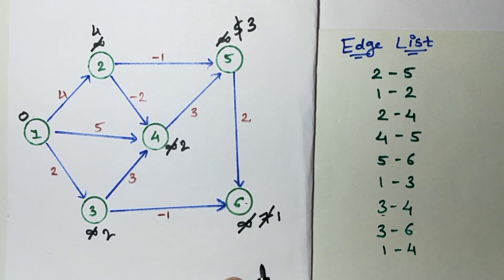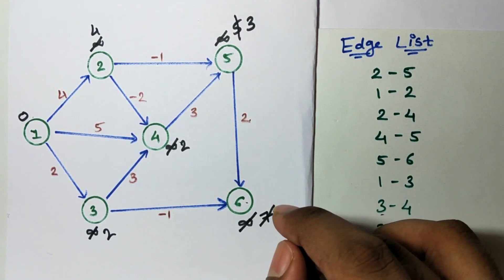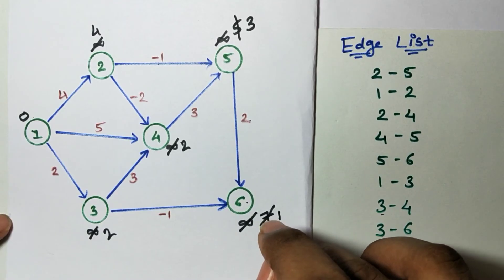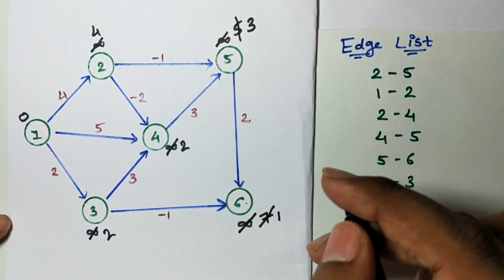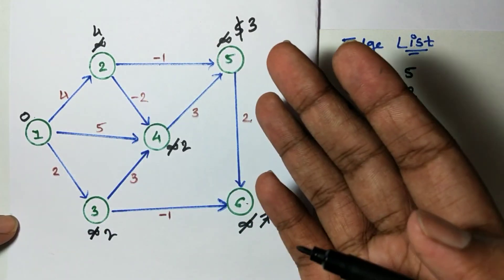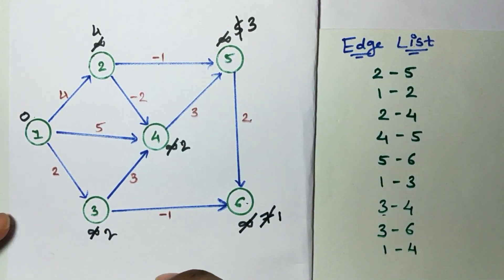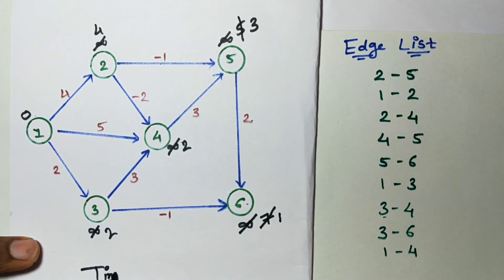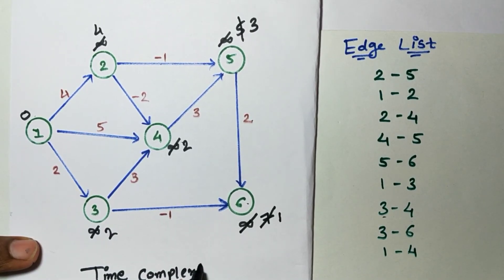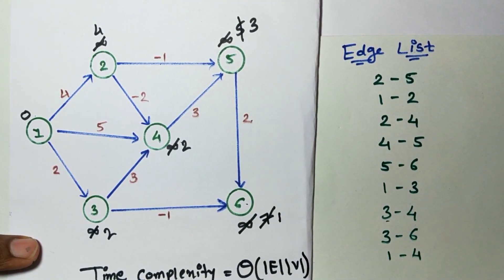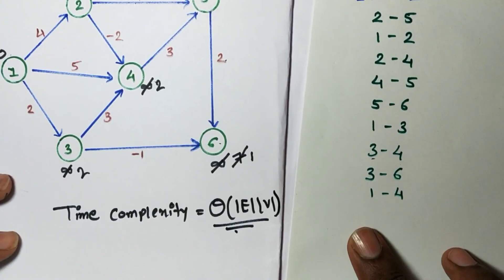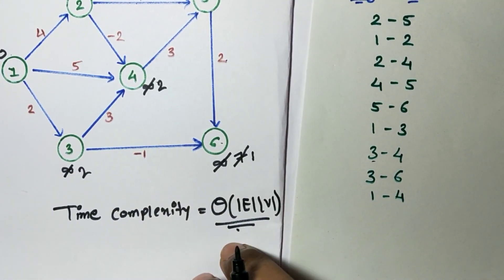Please note we have to perform this iteration N number of times, where N is the number of vertices. In the worst case we perform N iterations. In the average case, as we have seen, we get our answer in 2 to 3 iterations. This is our time complexity. Thank you.